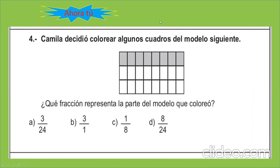Y por último, dice: Camila decidió colorear algunos cuadros del modelo siguiente. ¿Qué fracción representa la parte del modelo que coloreó? Hay un total de veinticuatro partes. Pero ella solo coloreó ocho partes. Por lo tanto, ella coloreó ocho veinticuatroavas partes del modelo.